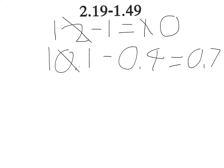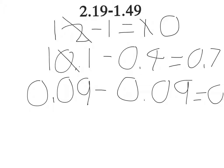Next, I need to subtract 9 hundredths from 9 hundredths, which is 0. Finally, I need to add up all the sums.